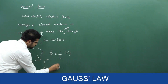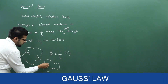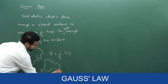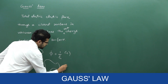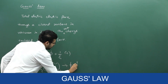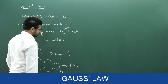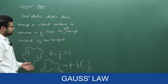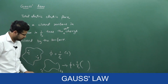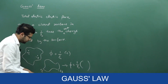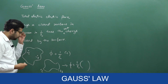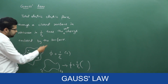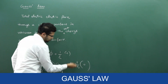Let me take one more example. One more closed surface: here there is a charge plus q, and outside the surface there are two charges, but the charge enclosed by the surface is 0. So here also flux is 0.